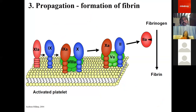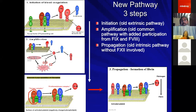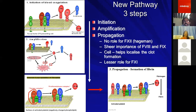In the new pathway, initiation corresponds to the old extrinsic pathway with factor IX involved; amplification is the old common pathway with additional participation from factor IX and factor V; and propagation is the old intrinsic pathway with no factor XII at all. Therefore, factor XII has no role in coagulation. The critical importance of factor IX and factor VIII is clear — without them, amplification does not occur, which is why haemophilia patients bleed profusely. Factor XI drives propagation, but if amplification produces 100,000 thrombin molecules, propagation has a lesser role, explaining variable bleeding in factor XI deficiency.